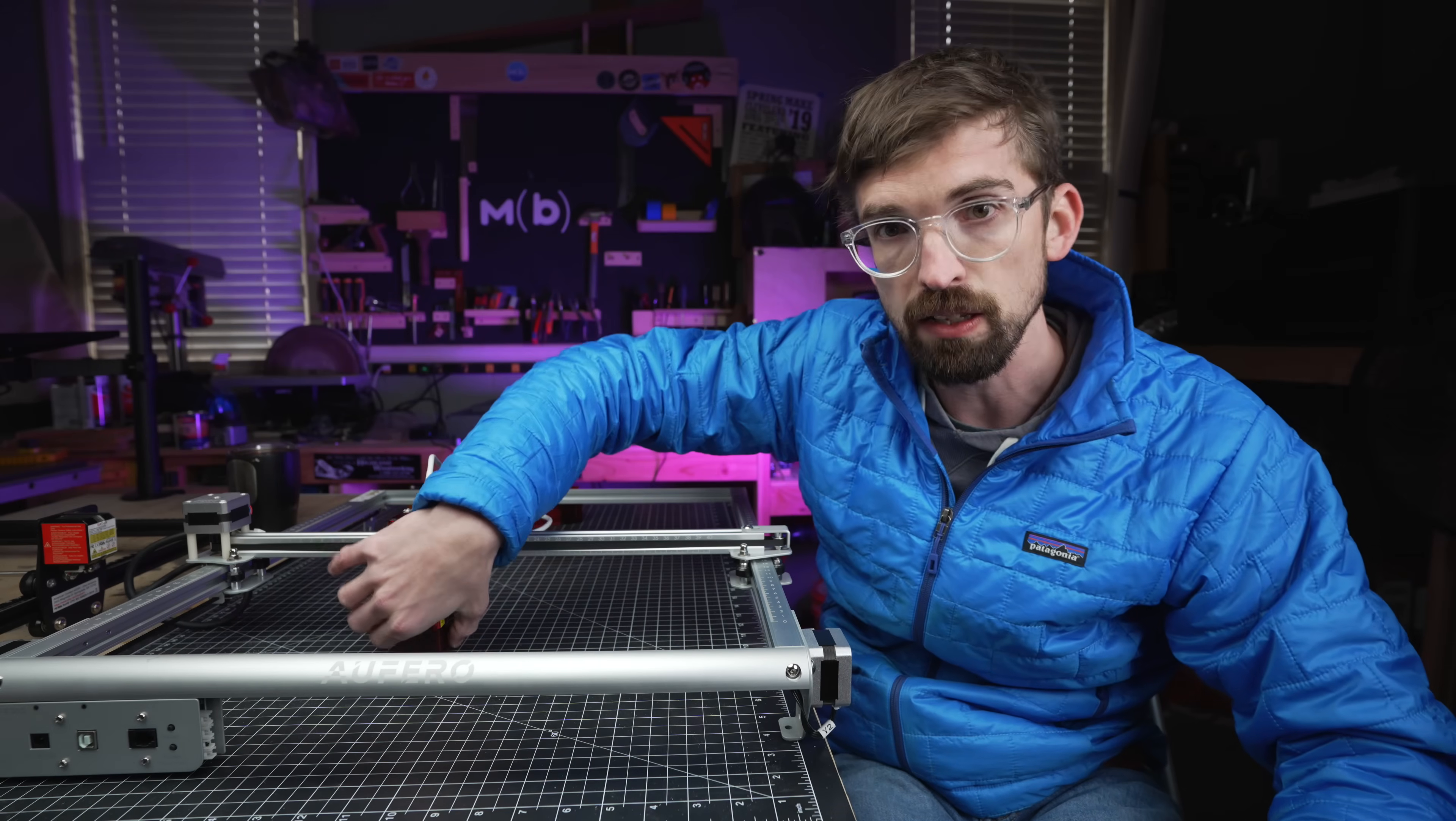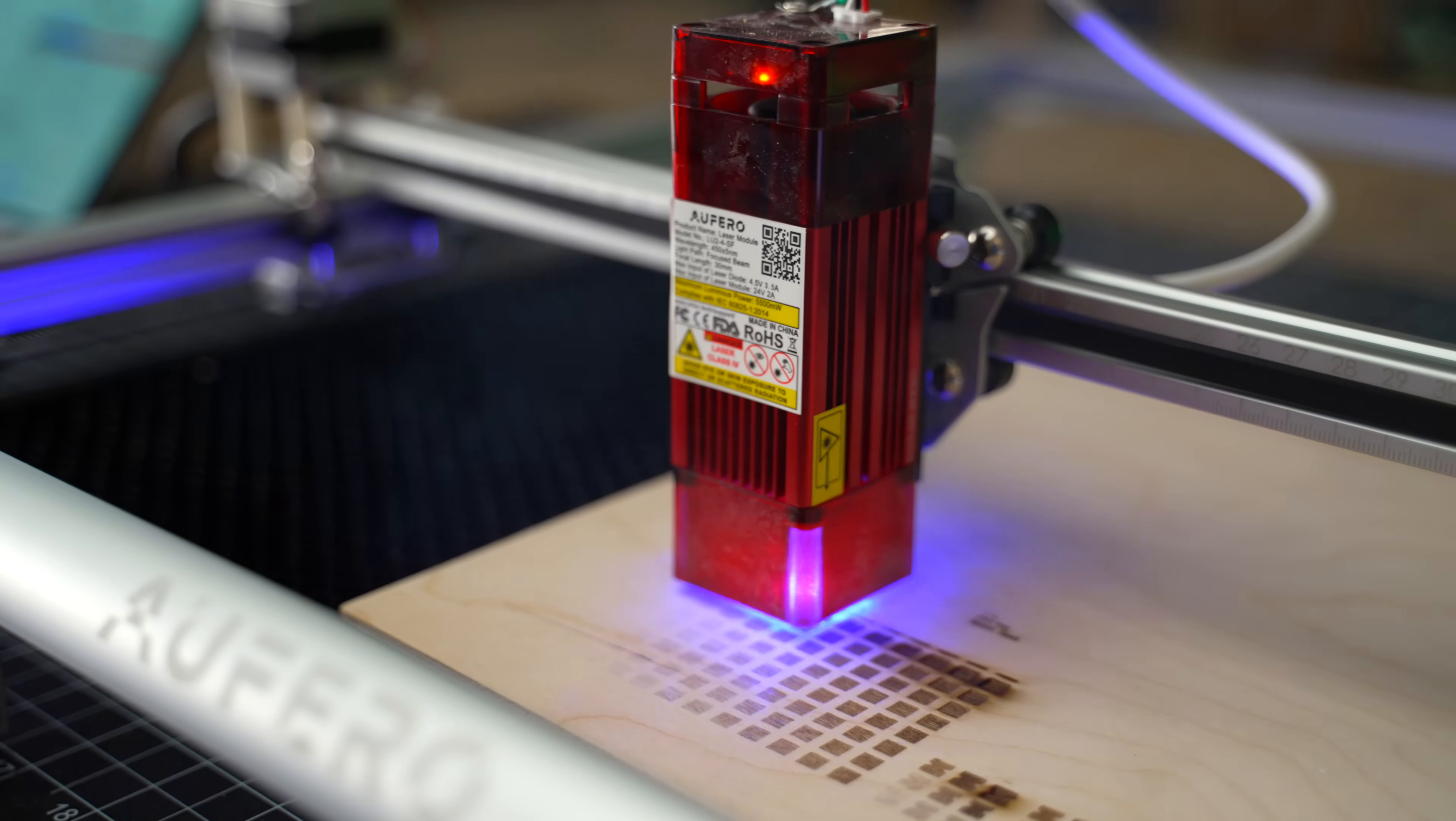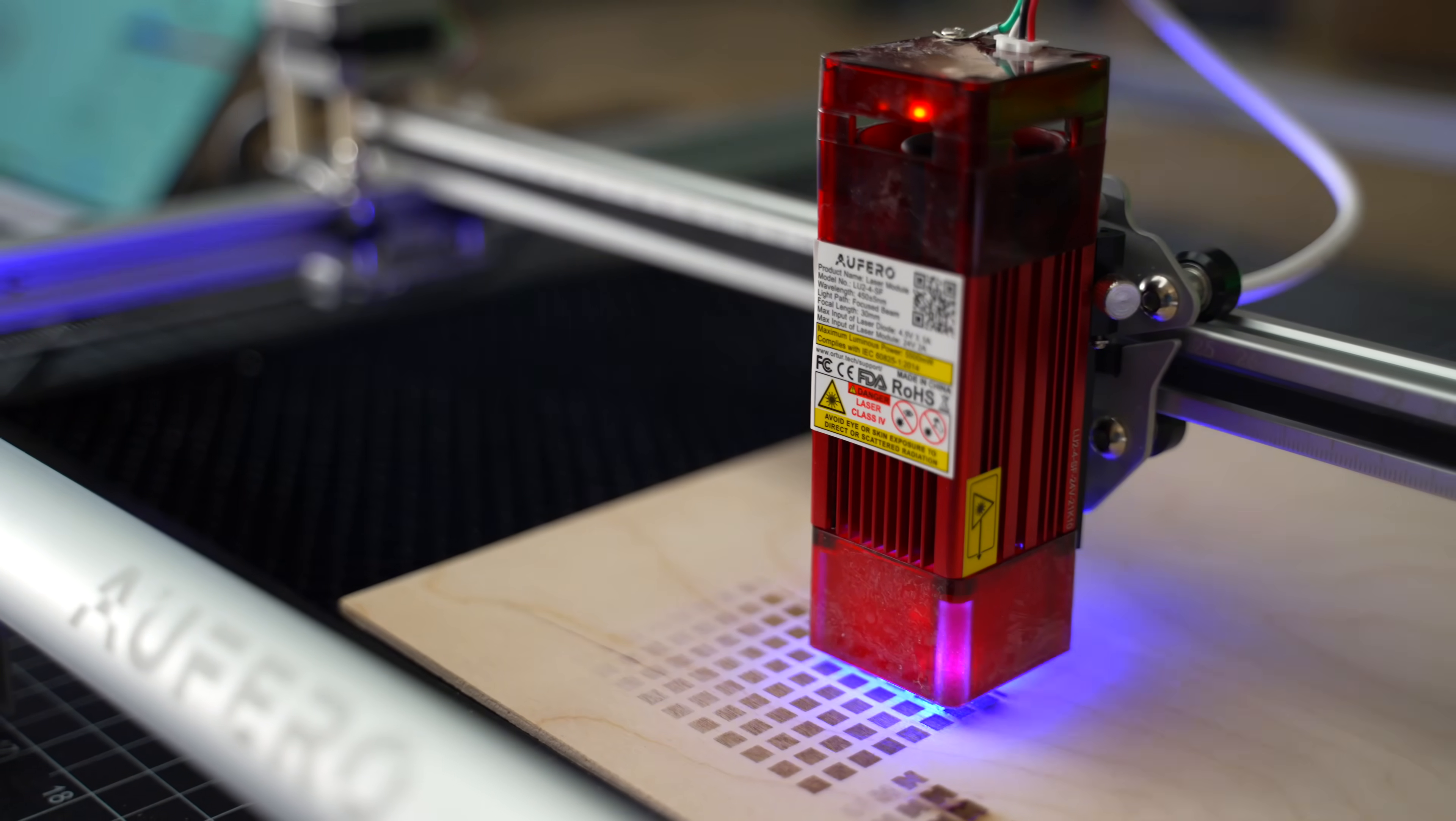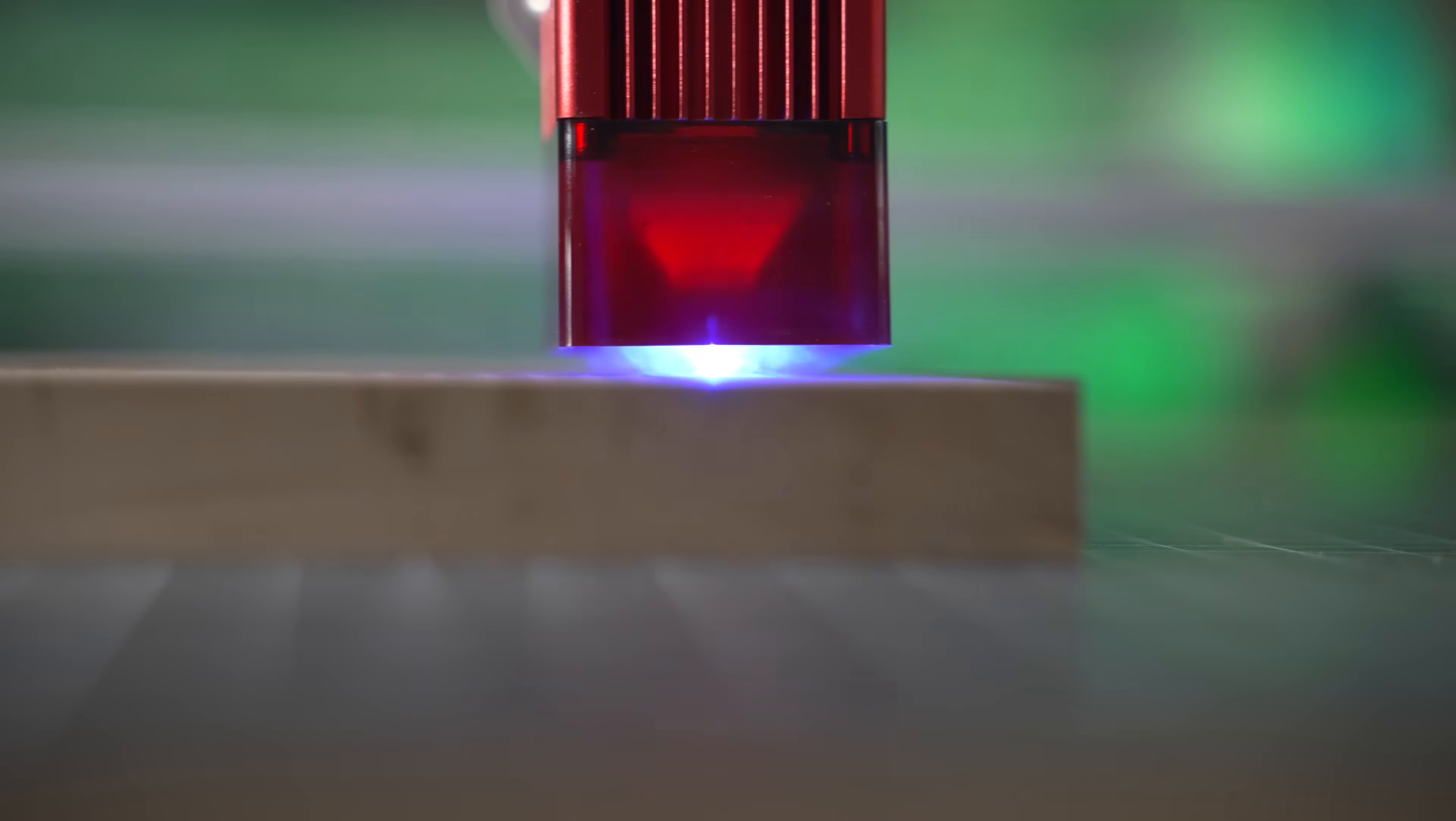And just on your eye safety side of things, this module comes just with this piece of acrylic and this will filter out a good bit of the light that is not great for you. But with all of these machines that don't have an enclosure, always make sure you're wearing glasses because you're still going to get light that's going to come out, even at the very bottom, that's going to bounce around. That could hurt your eyes.